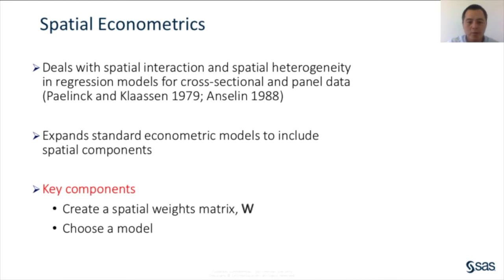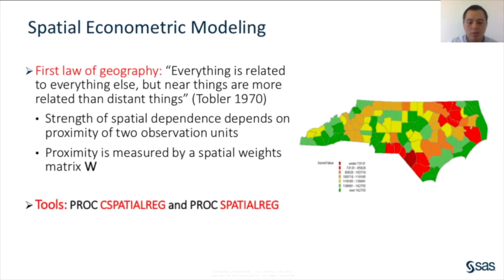Some background information about spatial econometrics: spatial econometrics is a subfield of econometrics that deals with spatial interaction and heterogeneity in regression models for cross-sectional and panel data. Spatial econometric models extend standard econometric models by including spatial components to account for spatial interaction and heterogeneity. Two key components in spatial econometric modeling are the spatial weight matrix and model specification. According to the first law of geography, the strength of spatial dependence is determined by the proximity of two spatial units. In spatial econometric modeling, we use a spatial weight matrix, often known as the W matrix, to describe the proximity of two spatial units. In SAS, there are two procedures for spatial econometric modeling: the C-SPATIAL REG procedure and the SPATIAL REG procedure.